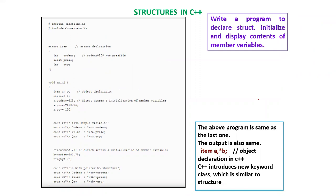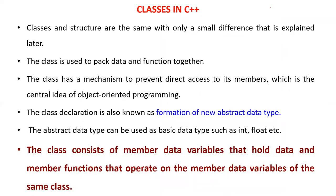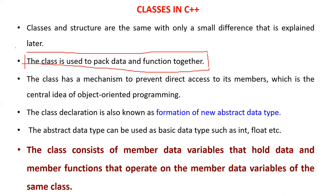But in C++, direct access works differently. Instead of struct, you use the keyword class. In C++, a class is used to pack data and functions together. It has a mechanism to prevent direct access to its members — that is the central idea of the OOP concept. The class declaration is called the formation of a new abstract data type. The class consists of member data variables that hold data and member functions that operate on those data member variables of the same class.